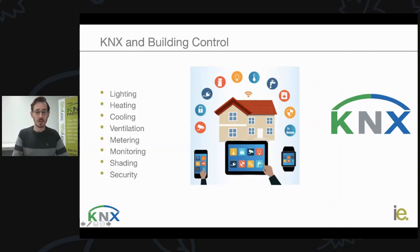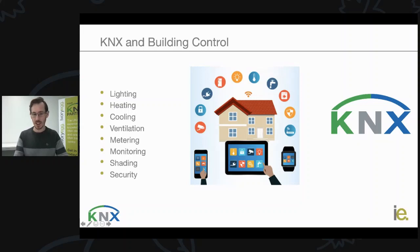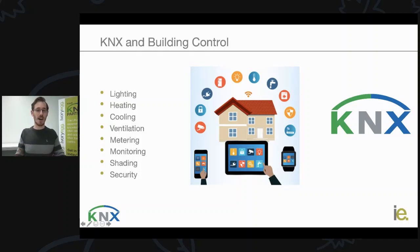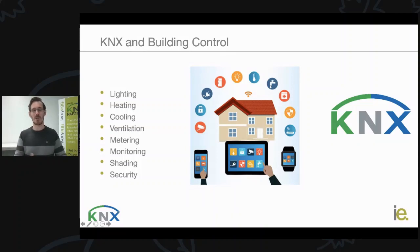So, KNX and building control. When we talk about building control, what do we mean? There are a lot of different services in a building that we can control: lighting, heating, cooling, ventilation — those are quite common — as well as shading, metering, and monitoring. All of these things are really the infrastructure of the building. They're the things that are hardwired, always present in a home at some level. It might not be an intelligent control system, but you still have a light switch, still have a way of controlling the lighting or the cooling.